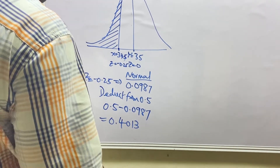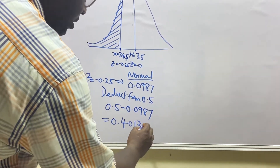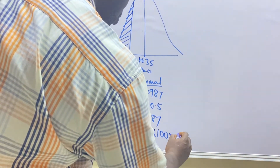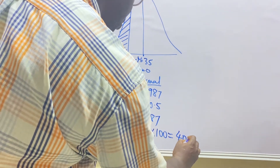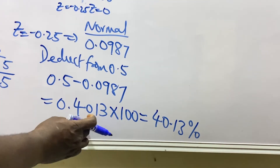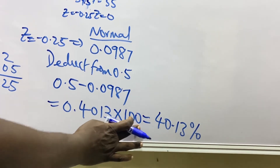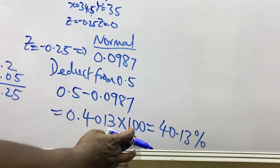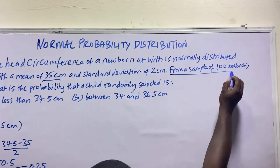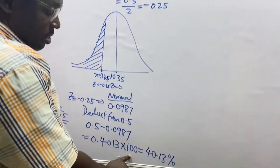So 0.4013 is our probability. But since we have a sample of 100 babies, we multiply by 100. That gives us approximately 40 babies. We multiply by 100 because the question asks about a sample of 100 babies.